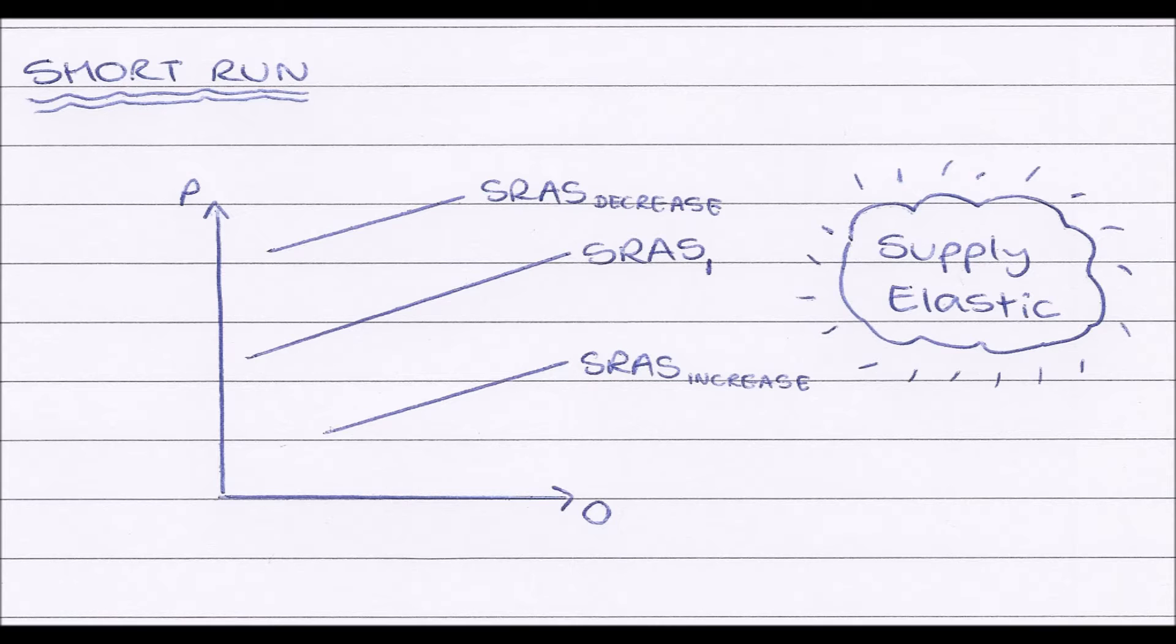And our short run aggregate supply curve is very supply elastic. And this is because in the short run, businesses can very quickly change the amount they're producing. They can extend or lower office and factory hours. And really, that has a huge impact on the amount that they produce. So, for example, in the short run, a firm can reduce the amount that it is producing, not by laying off workers or selling machines, but in fact by just slowing down operations and reducing the amount of time that the factory is open.